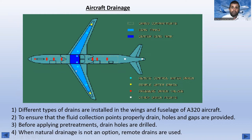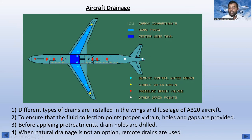Now, aircraft drainage: you can see the aft and forward cargo compartments, wing tanks, center wing tank, and drainage points. Light blue indicates remote-control water drains, amber indicates simple water drains, red indicates pressure drain valves, and there are also other drain ports. Different types of drains are installed in the wings and fuselage to ensure fluid collection points properly drain. Drain holes are drilled when natural drainage is not an option; remote drains are used as needed.